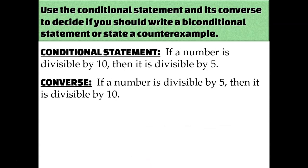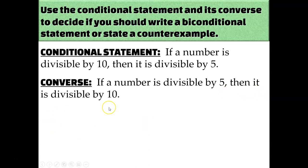Let's look at a few examples and determine: should I write a biconditional statement or provide a counterexample? Our conditional statement is: if a number is divisible by 10, then it is divisible by 5. That's true — for example, 20 is divisible by 10 and also by 5. Now for the converse: if a number is divisible by 5, then it is divisible by 10. You could pick a number that works, like 20 again — it's divisible by both 5 and 10. But that's just an example.